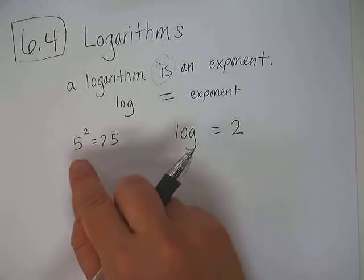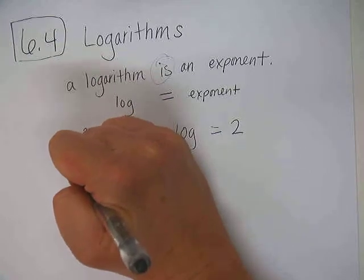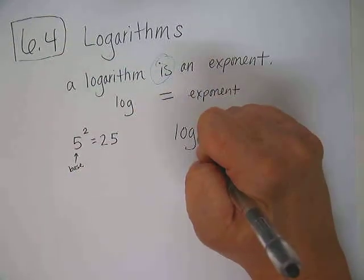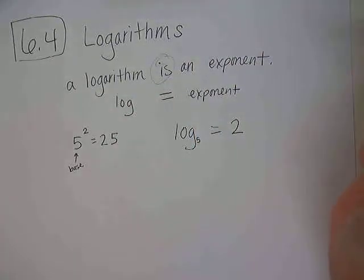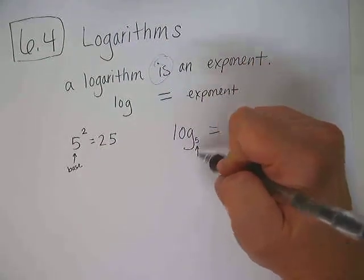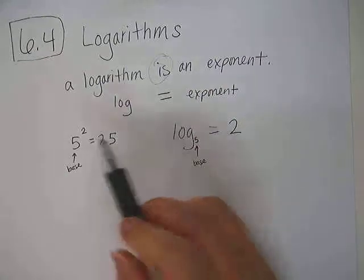Now the tricky thing is figuring out where the other stuff go. The 5 is always called the base of the exponent. So it also is the base of the logarithm. We write it as a little teeny 5 so that it's log base 5. So base of the exponent is also the base of the logarithm.